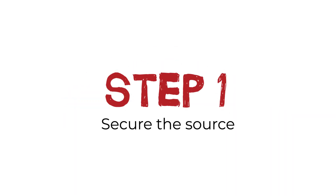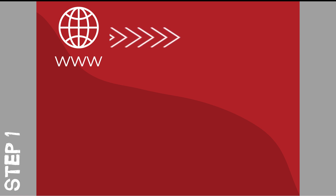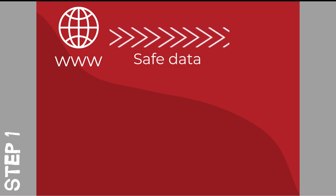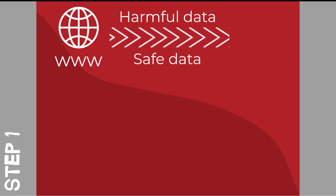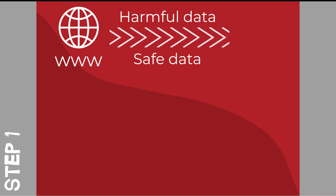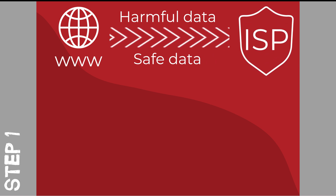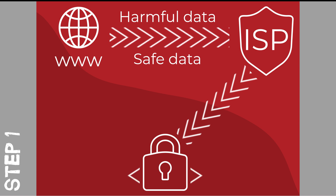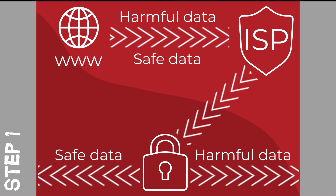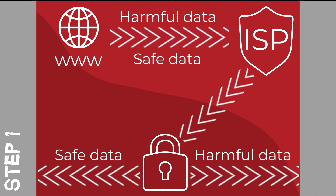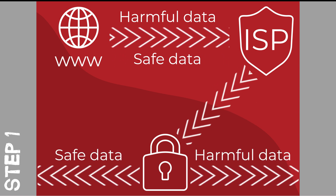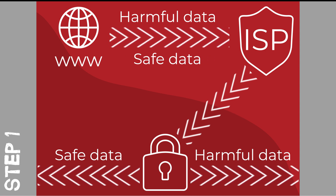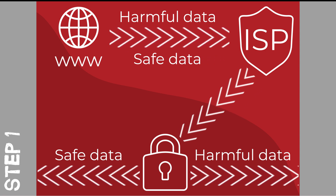The World Wide Web or the Internet comes from somewhere. The company that provides you access to the Internet via a cellular or fibre connection is called an ISP — Internet Service Provider. Some of these service providers offer blocking and filtering of pornography. Step 1 would be to choose an ISP that offers protection over one that doesn't.